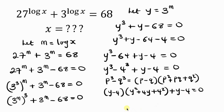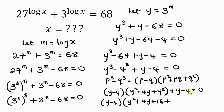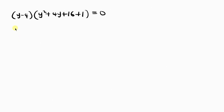You'll notice that y minus 4 is common in both parts. So let's factorize that out. We have y minus 4 times the quantity y squared plus 4y plus 16 plus 1, equal to 0. So this becomes y minus 4 times y squared plus 4y plus 17, equal to 0.